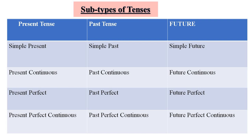Present tense is divided into four subtypes: simple present, present continuous, present perfect, and present perfect continuous. Past tense is divided into: simple past, past continuous, past perfect, and past perfect continuous. Future tense is divided into four parts: simple future, future continuous, future perfect, and future perfect continuous.